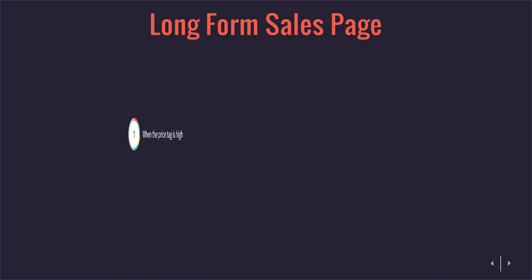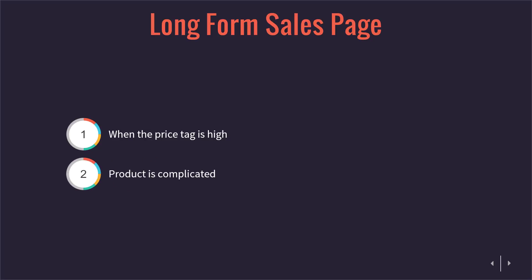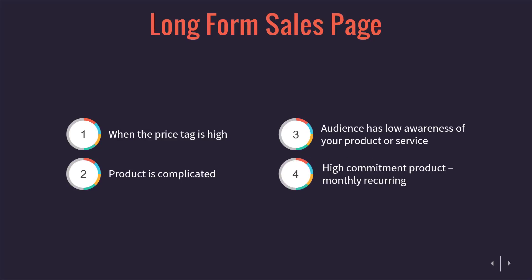You use a short form sales page when the product or service is easy to understand and use. Now you use the long form sales page when the price tag is a little bit high — when you're working on $500 or more, even $200 sometimes. You could also do a hybrid, like a medium form sales page. The product is also a little bit complicated, and your audience has low awareness of your product or service. That's where you use the long form.